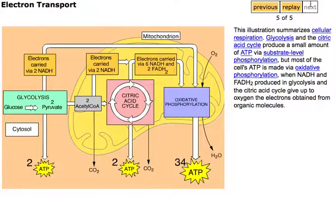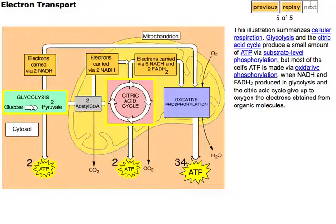This illustration summarizes cellular respiration. Glycolysis and the citric acid cycle produce a small amount of ATP via substrate level phosphorylation.